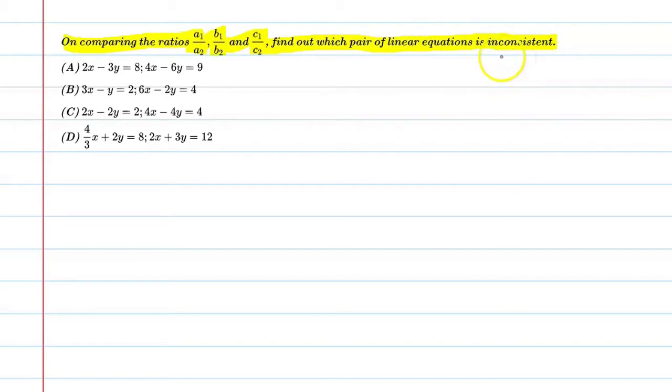Inconsistent means we need to compare all the equations. Graphically, we need to say that those lines which are parallel are inconsistent.